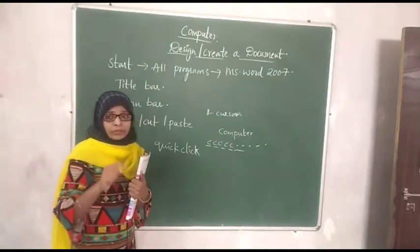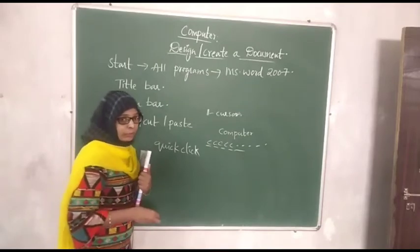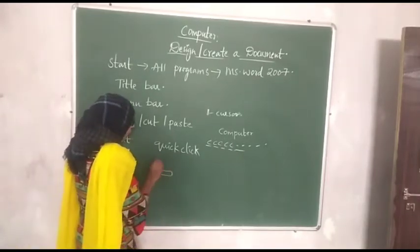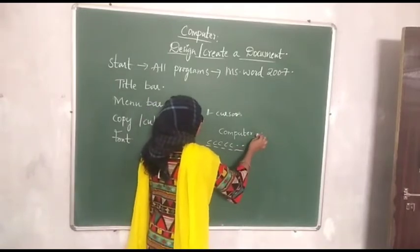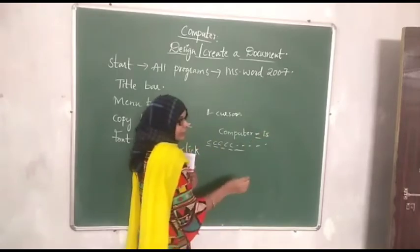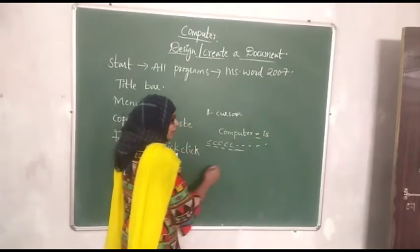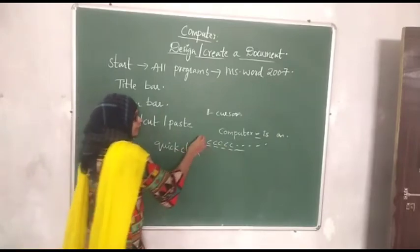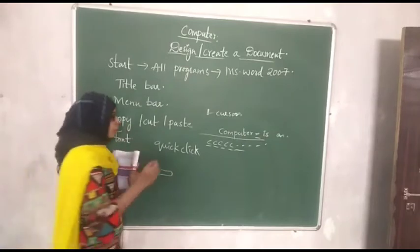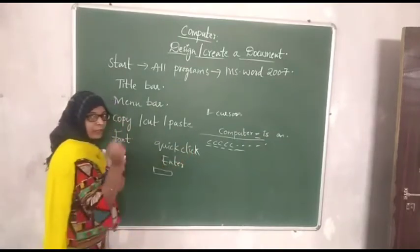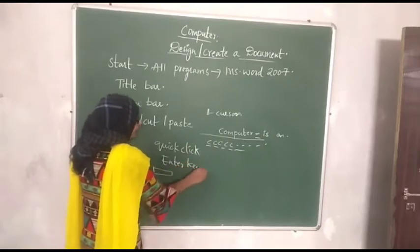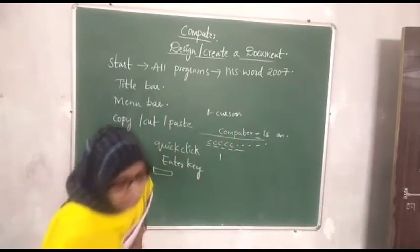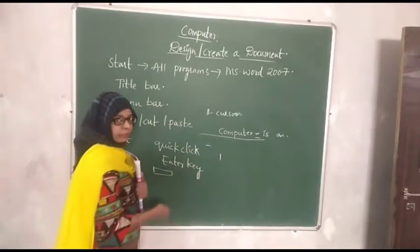Just as you give finger space when writing in your notebook, the option here is the space bar. To give a space, click on the space bar — your cursor moves automatically. Then if you have written a sentence like 'computer is an electronic machine' and you want to come to the next line, press the Enter key. This takes you to the second line automatically and the cursor appears there.